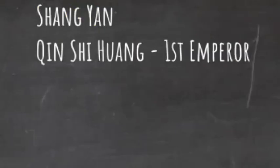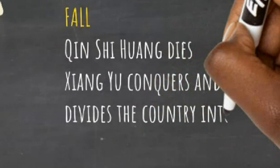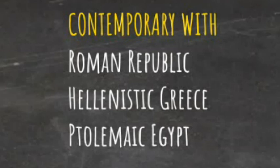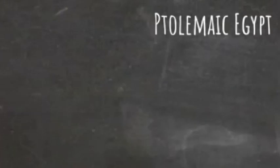The Han dynasty ruled from 206 BCE to 220 CE, contemporaneous with the Roman Republic, the Roman Empire, Hellenistic Greece and Ptolemaic Egypt. It was a dynasty that saw further territorial expansion in all directions. Of the 18 states vying for power as the Qin empire crumbled, the two main contenders were the Chu and the Han. Their rivalry is so well remembered that in China, the two sides of a Chinese chessboard are named after them. It was the Han that won the battle for power and ushered in a period of innovation.